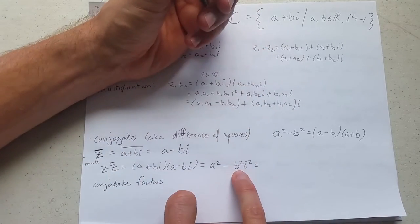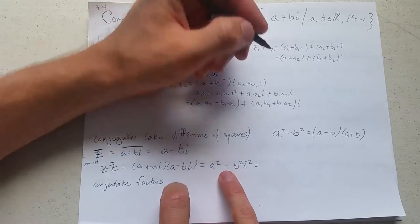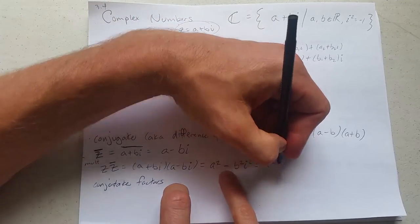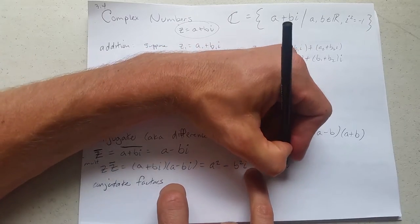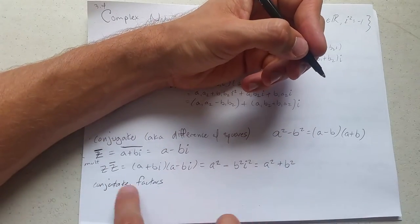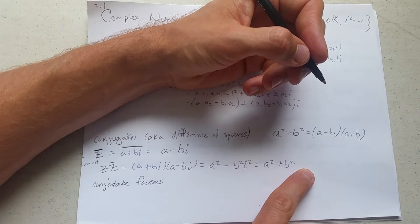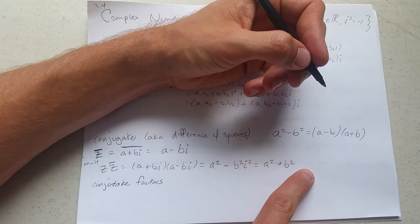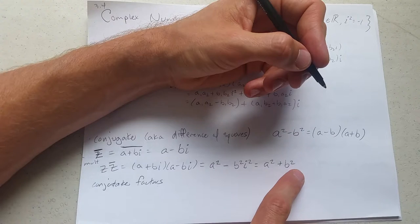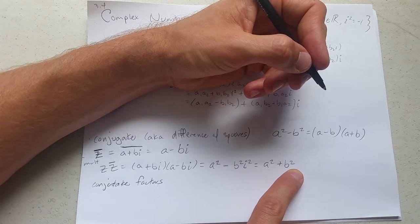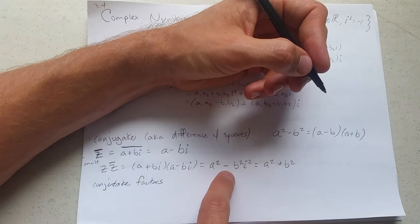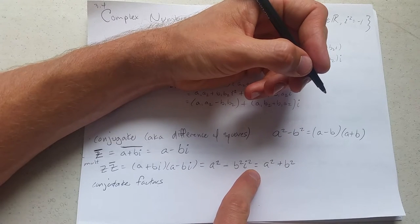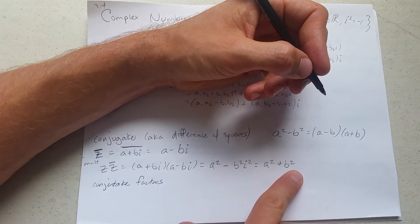Now what's i squared? Negative 1. And we're just left with a squared. Now it's minus negative 1. So we get a squared plus b squared. So this is what happens when you multiply complex conjugates together. It's a little bit strange because instead of minus b squared, it's plus b squared because you squared the i and this i squared turns into negative 1.